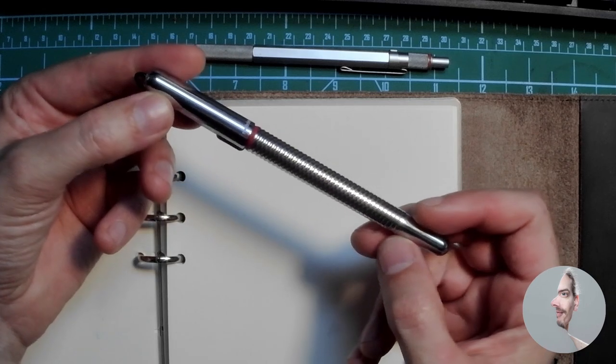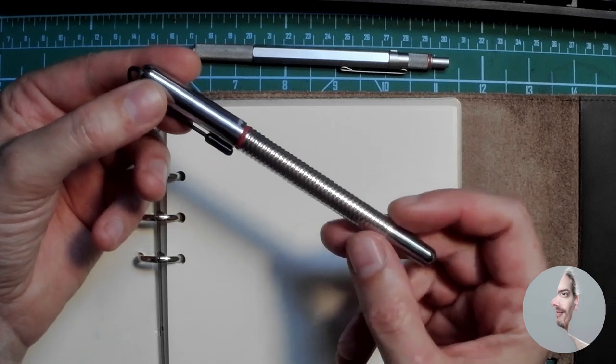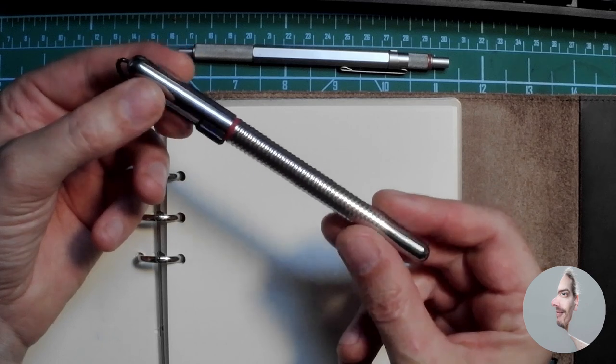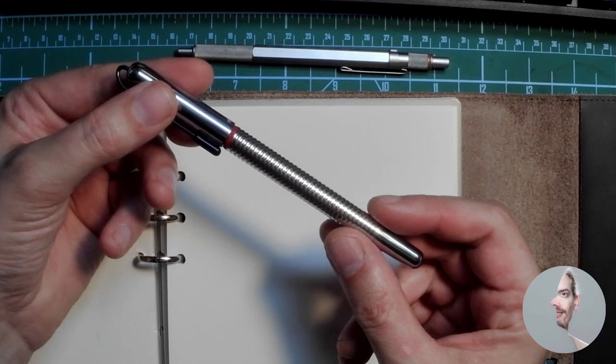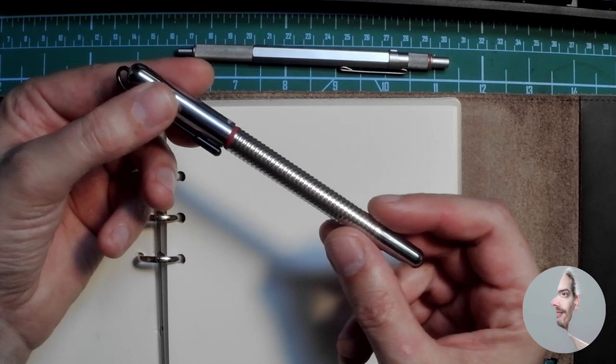This is a Rotring 900 stylograph I bought from classifieds a while, some weeks or months ago.